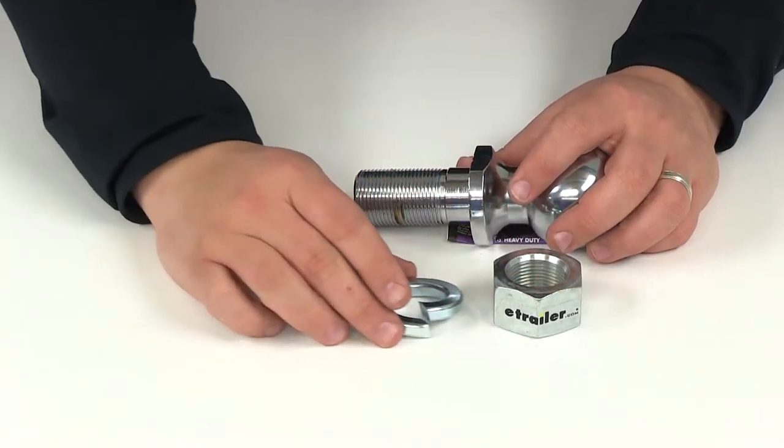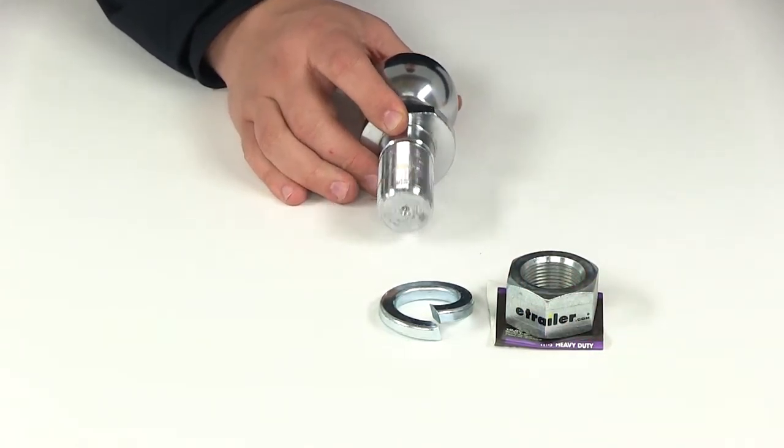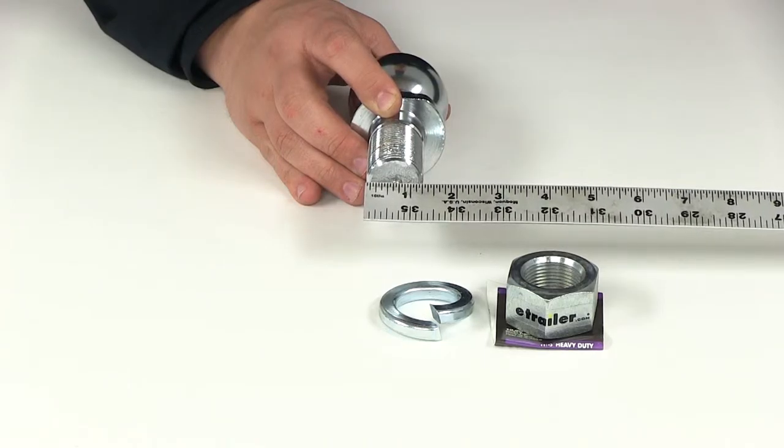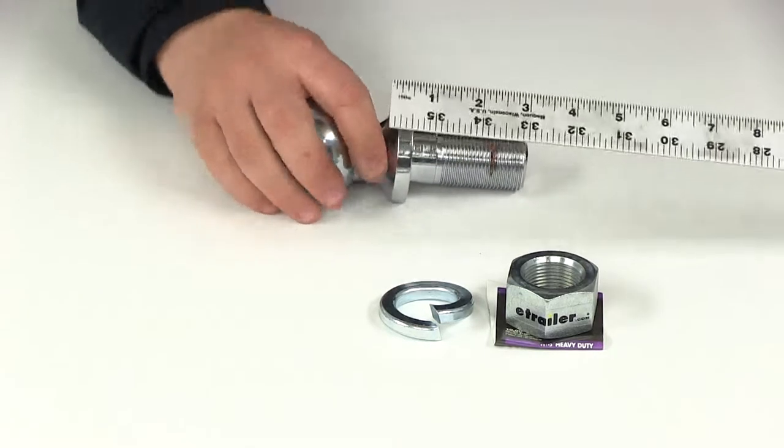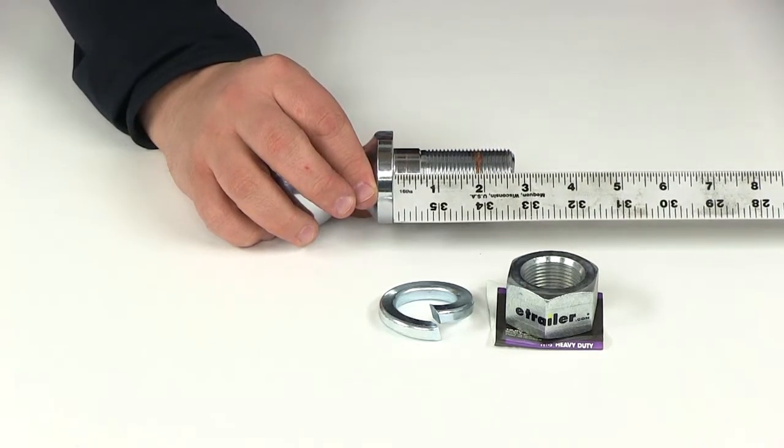A few measurements to go over with you real quick. This hitch ball is going to give us a shank diameter of an inch and a quarter. It's going to give us a shank length measuring from the bottom of the platform to the end of the threads of 2 5/8ths of an inch.